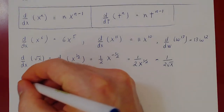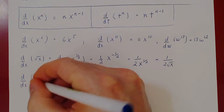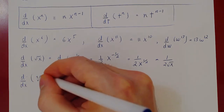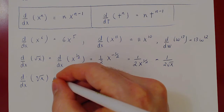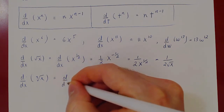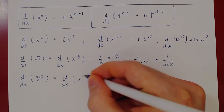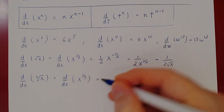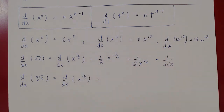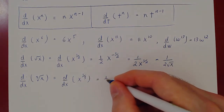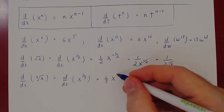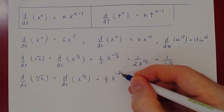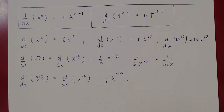What about the derivative with respect to x of the cube root of x? Same thing — rewrite the cube root as x to the 1/3. Once again we have x to a fixed power, so bring the power down: 1/3 times x to the 1/3 minus 1, and you get 1/3 times x to the negative 2/3.